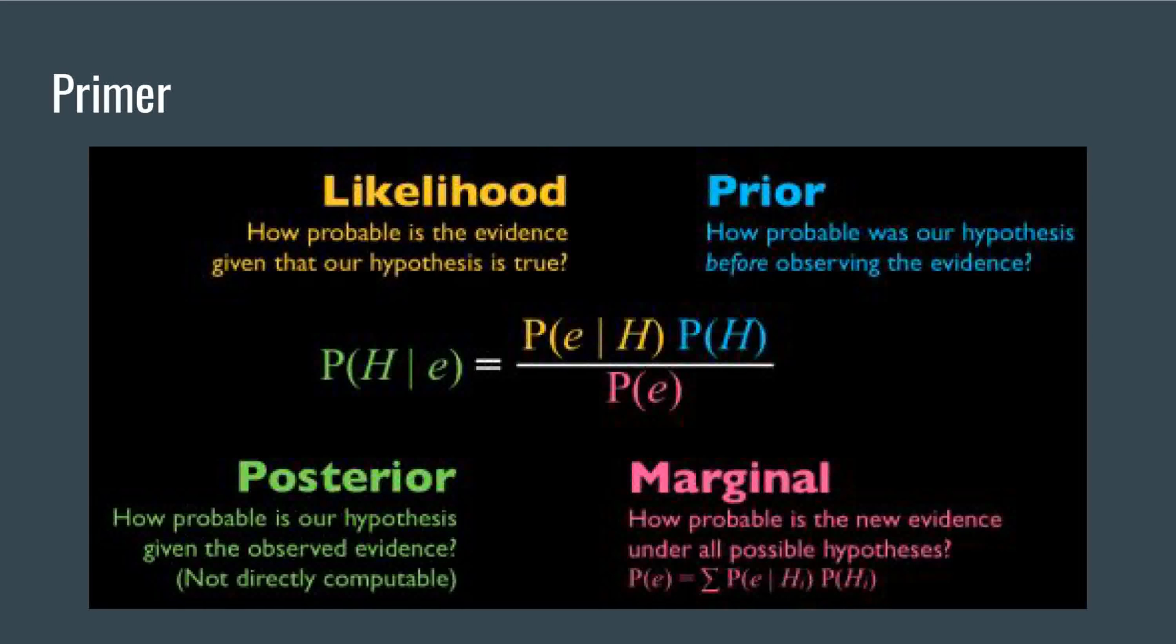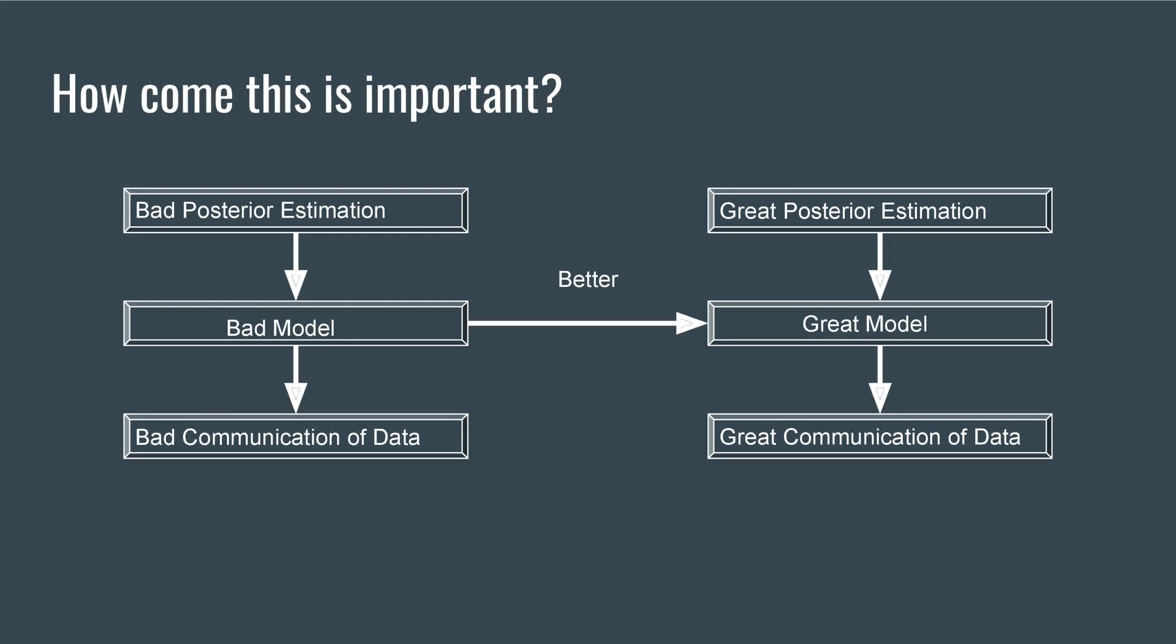Given some data, we need to estimate the model which best explains the data. This is also known as posterior estimation. As we can see, the posterior is directly proportional to the product of likelihood and prior. The problem of posterior estimation is important as it is the key step in inferring a model from real-world data.